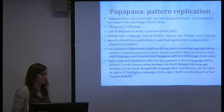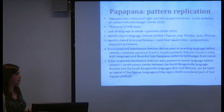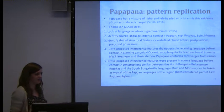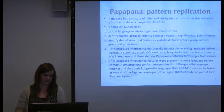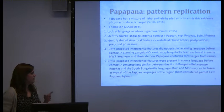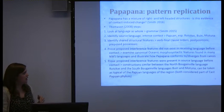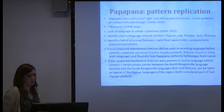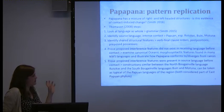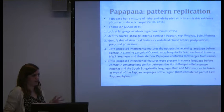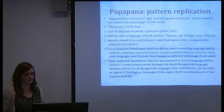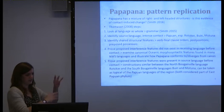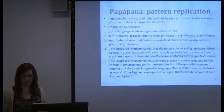A fifth step is to prove that interference features were present in the source language before contact — again difficult without records from 100 years ago. But if we look at constructions in the North Bougainville language Rhoticus, and in South Bougainville languages Buin and Motuna, and find constructions that are similar between those languages, we can take those as typical of the Papuan languages of that region. These languages are considered part of the East Papuan phylum, even though the relationship between North and South Bougainville languages is not fully certain.